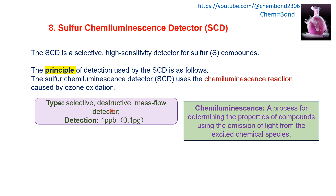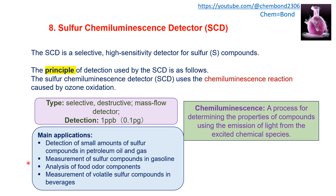The SCD is a selective destructive mass flow detector. Detection limit is 0.1 ppb or 0.1 picogram per liter. Applications include detection of small amounts of sulfur compounds in petroleum, oil, gas, and gasoline, food odor compounds, and the analysis of volatile sulfur compounds in beverages.